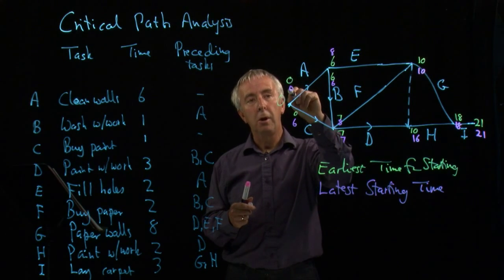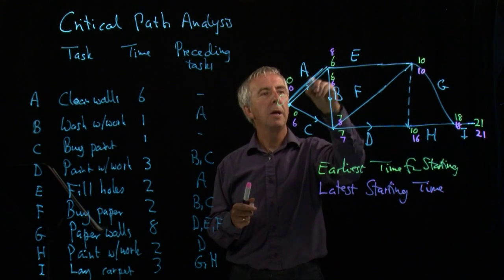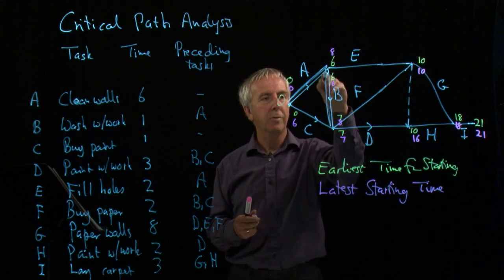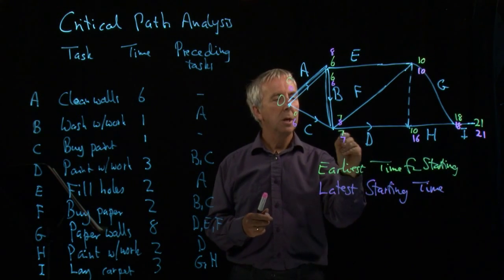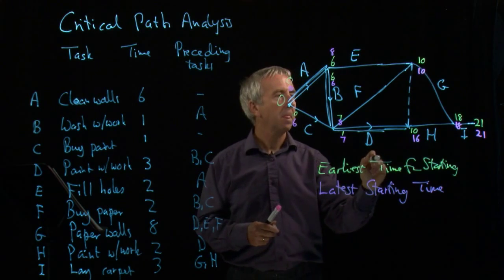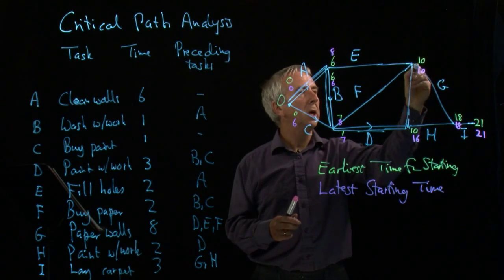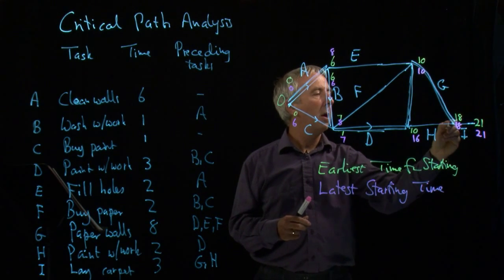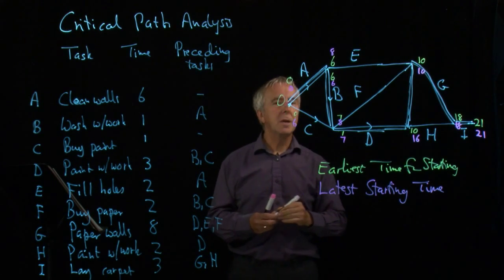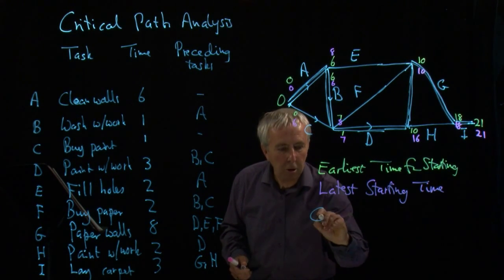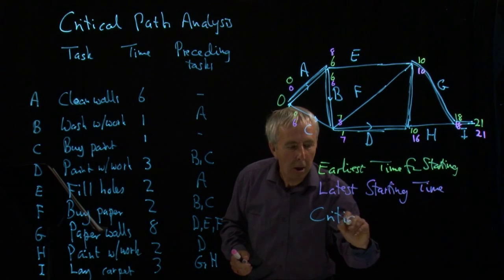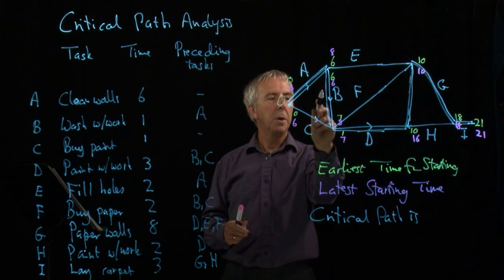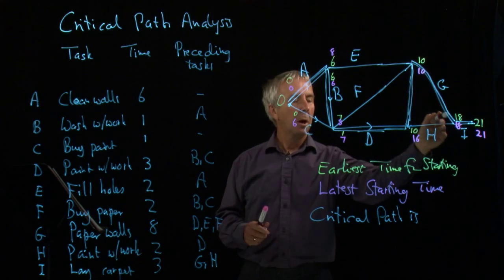And if we put these on now. A must start at 0, there's no leeway there. B must start at 6, so that's a critical activity. D must start at 7. And it can come up here. G must start at 10. And I must start at 18. So those activities are critical. And we say that the critical path is A, B, D, G, I.